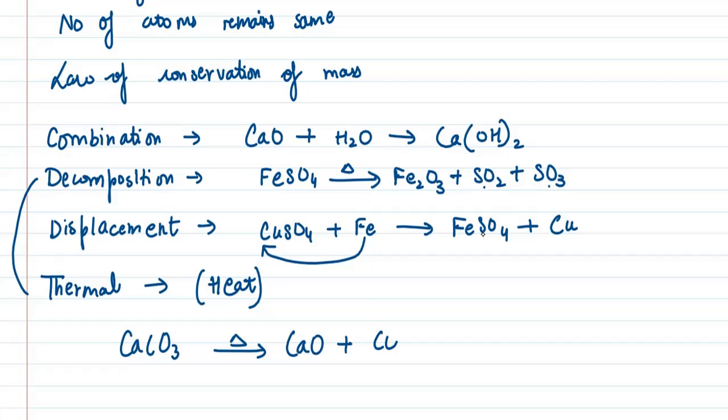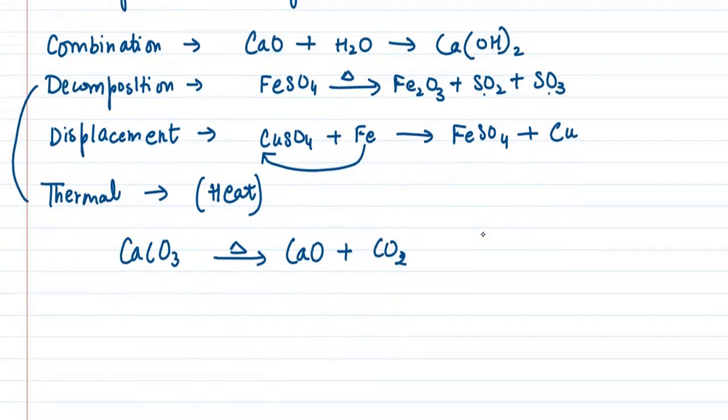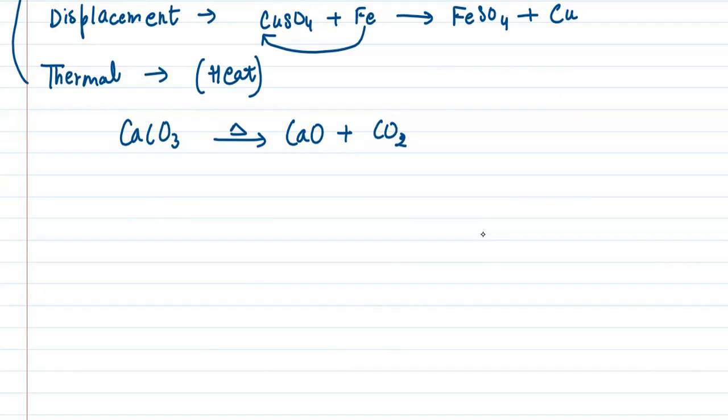Next is electric decomposition. Electric decomposition means electricity must be involved. If you want to break a substance into two or three parts, you need to use electric current for that. For example, 2H2O under electricity gives you 2H2 and oxygen as gas.